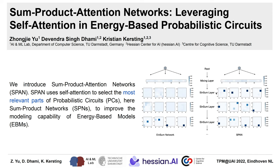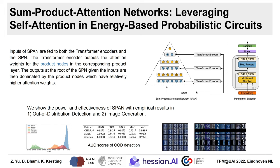We show that while modeling, SPAN focuses on a specific set of independent assumptions in every product layer of the SPN. Inputs of SPAN are fed to both the transformer encoders and the SPN. The transformer encoder outputs the attention weights for the product nodes in the corresponding product layer. The outputs at the root of the SPN, given the inputs, are then dominated by the product nodes which have relatively higher attention weights.